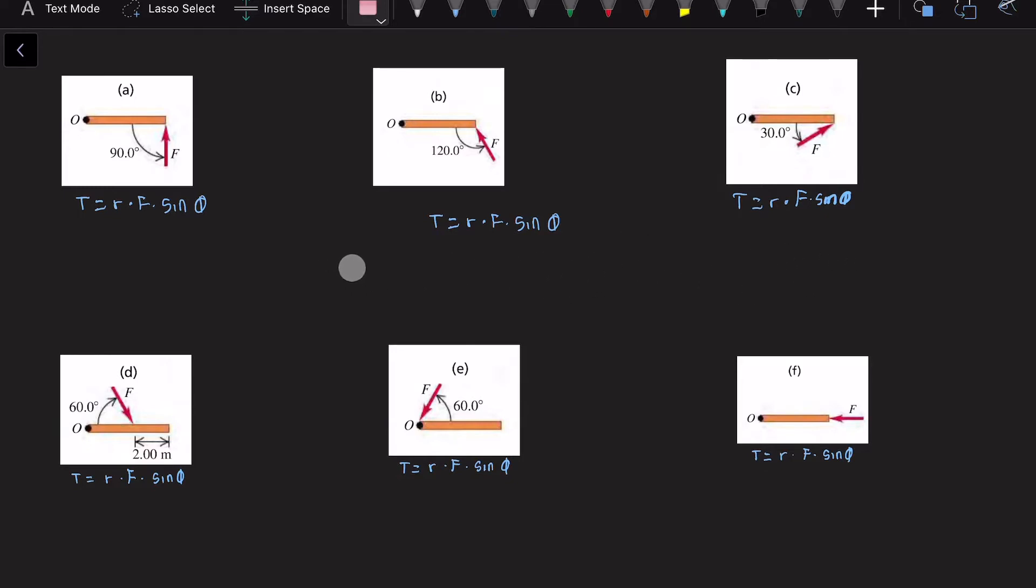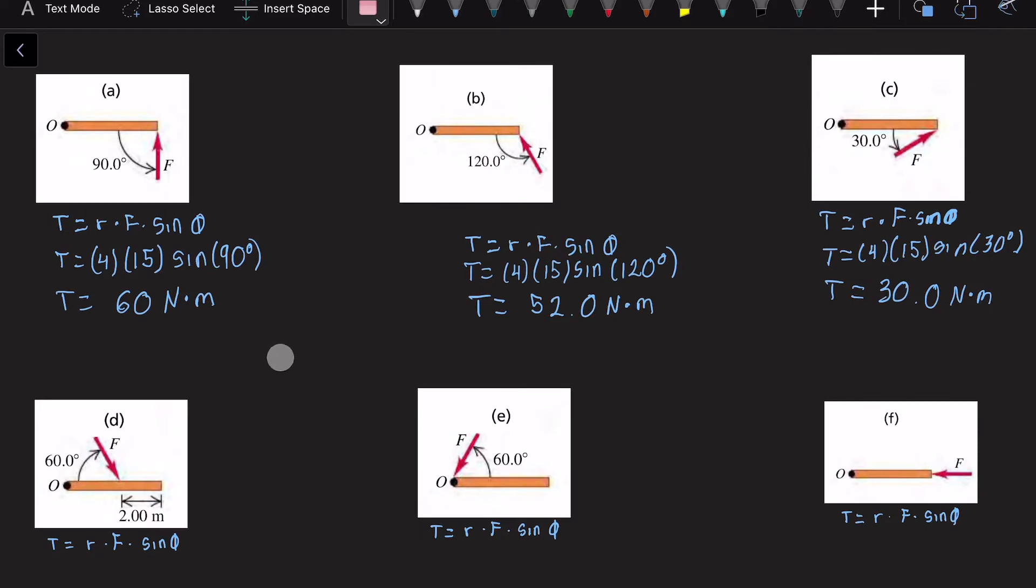If we multiply the radius times the force times the sine, we're going to get a different approach, and then we are going to apply the right-hand rule after calculating the torque. In every case we get for section A, 60 newton meters, B, 52 newton meters, and in part C is 30 newton meters.